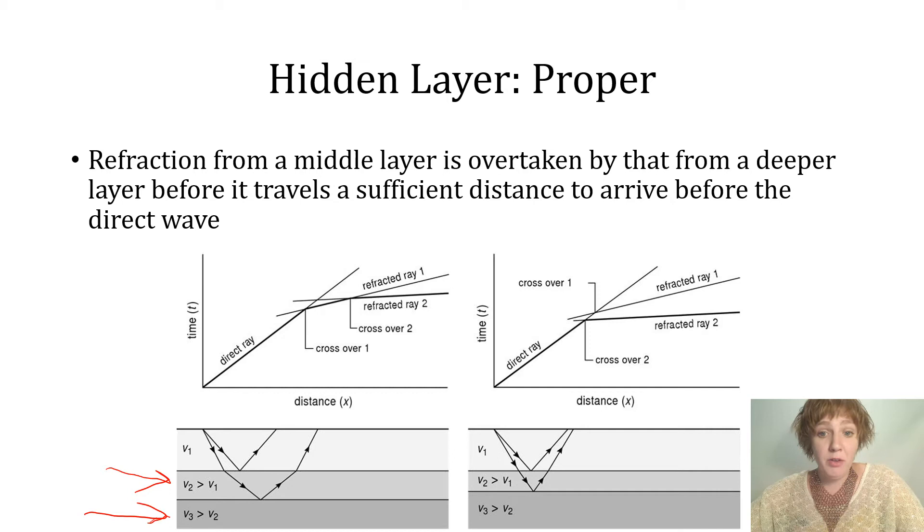Remember, the critically refracted wave is refracted all the way up to the boundary where it travels at a faster pace than in the layer above, and eventually that enables it to arrive before the head wave, the direct wave.